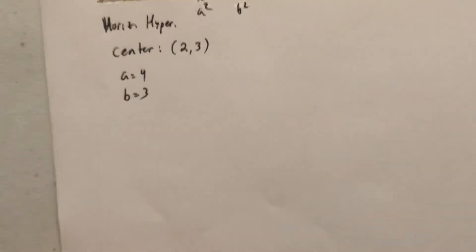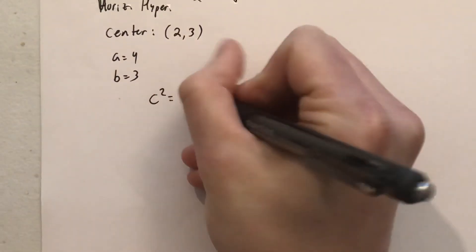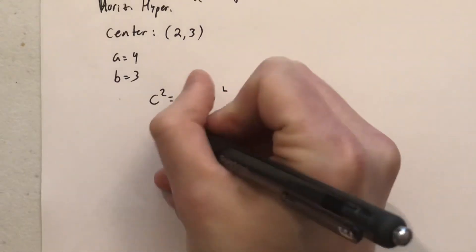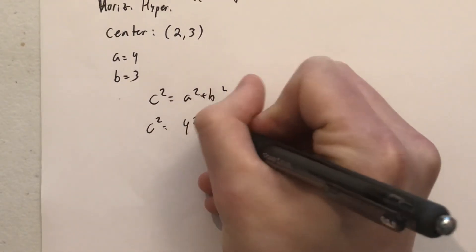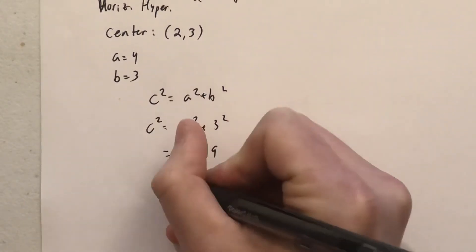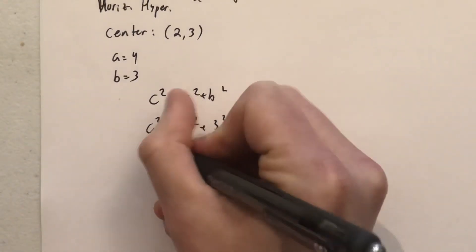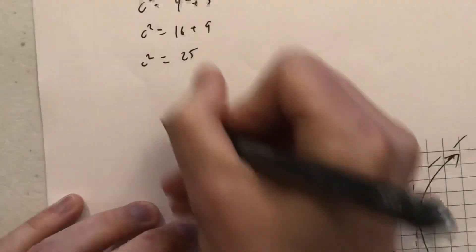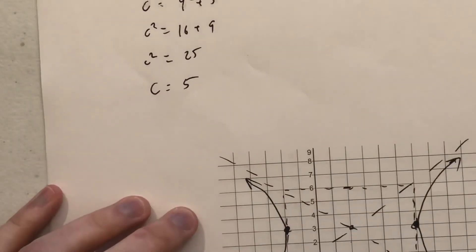From there, we can use our focus formula, foci formula to find that value for c. So 4 squared plus 3 squared, 16 plus 9, so 25. So that's our c squared. So that would mean c is going to be 5.